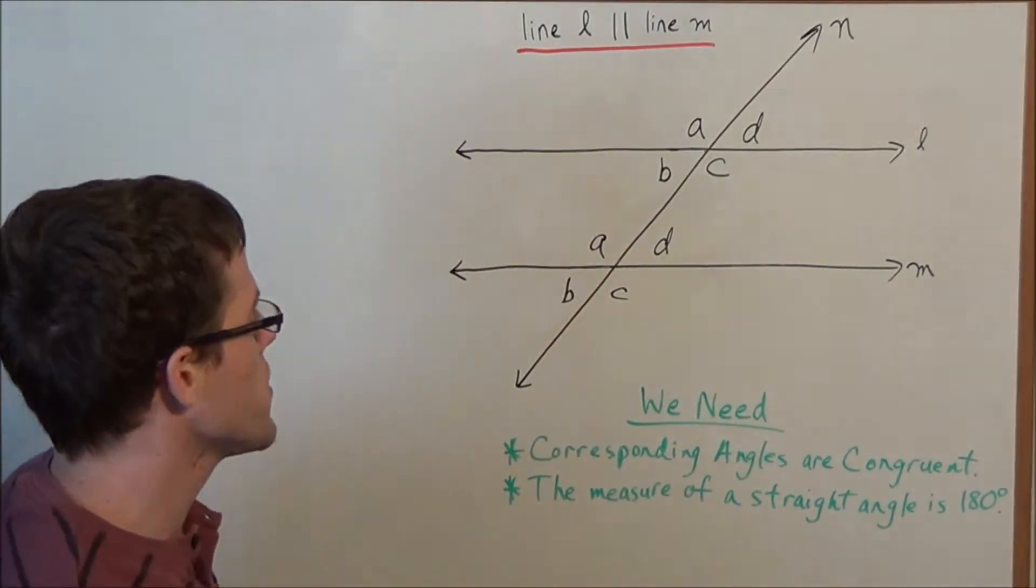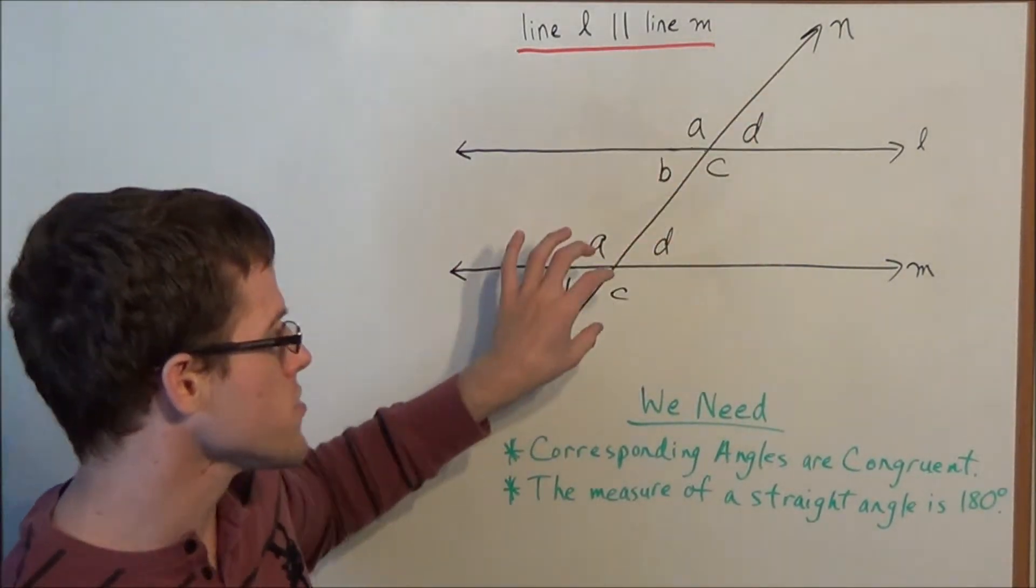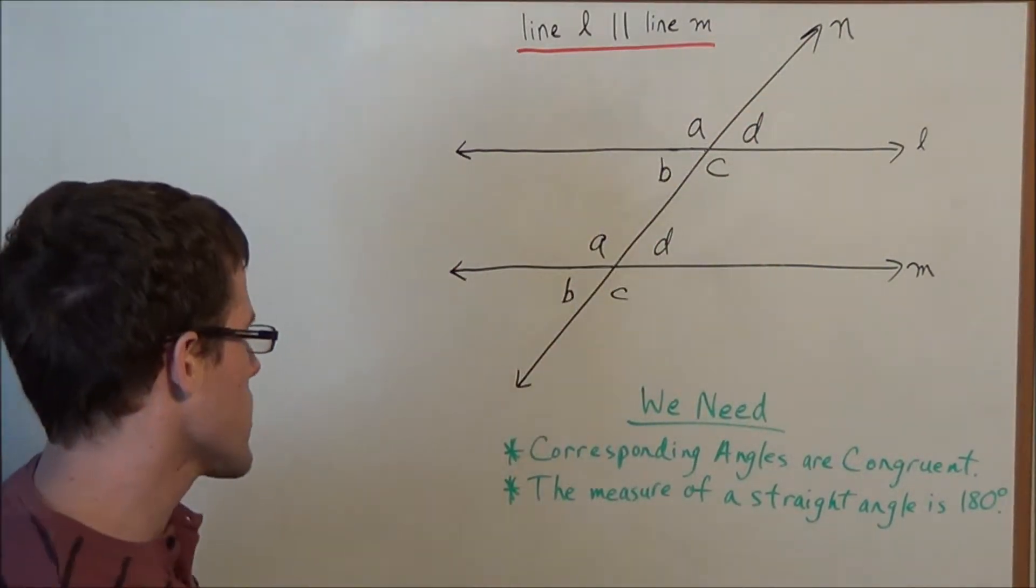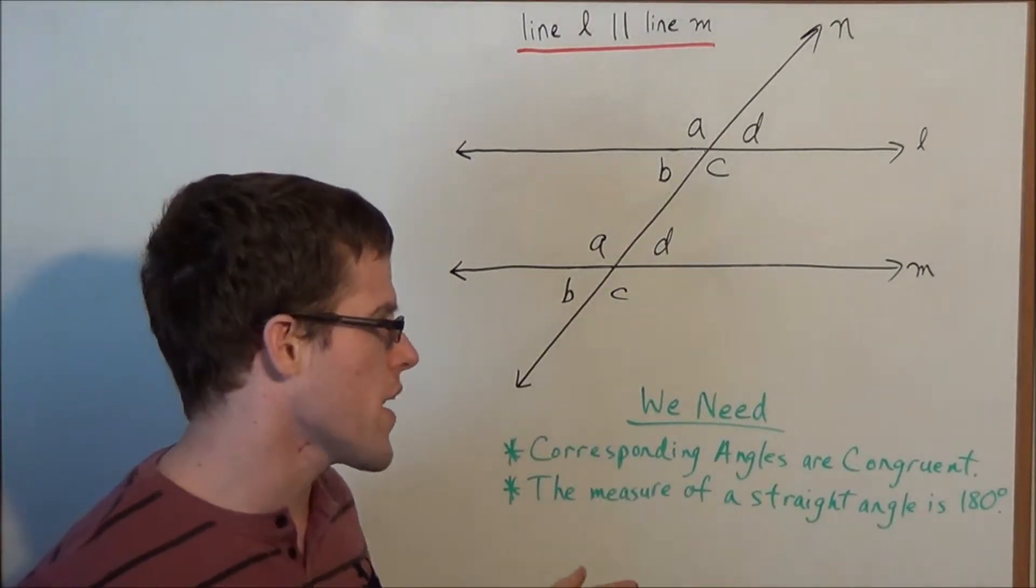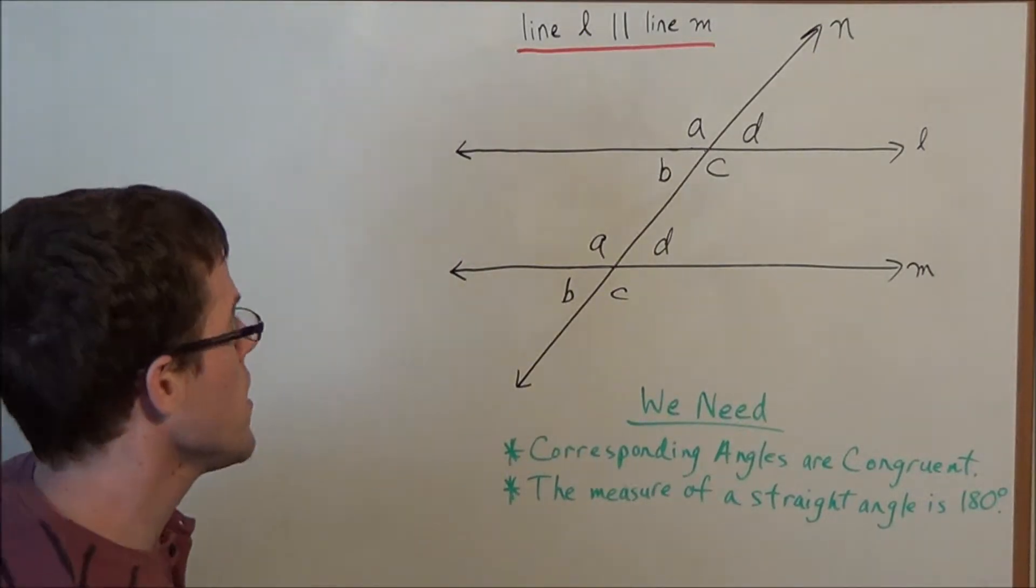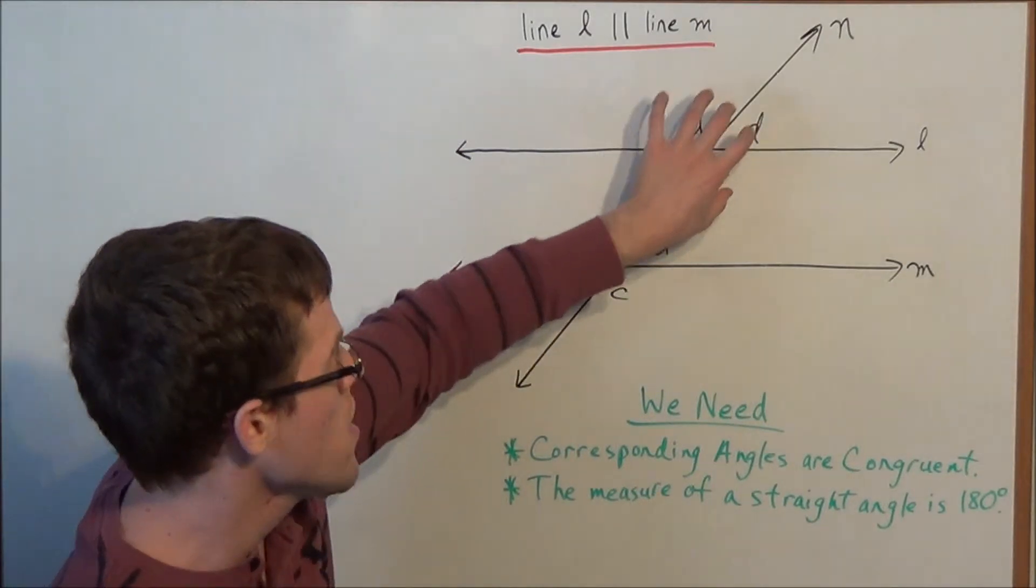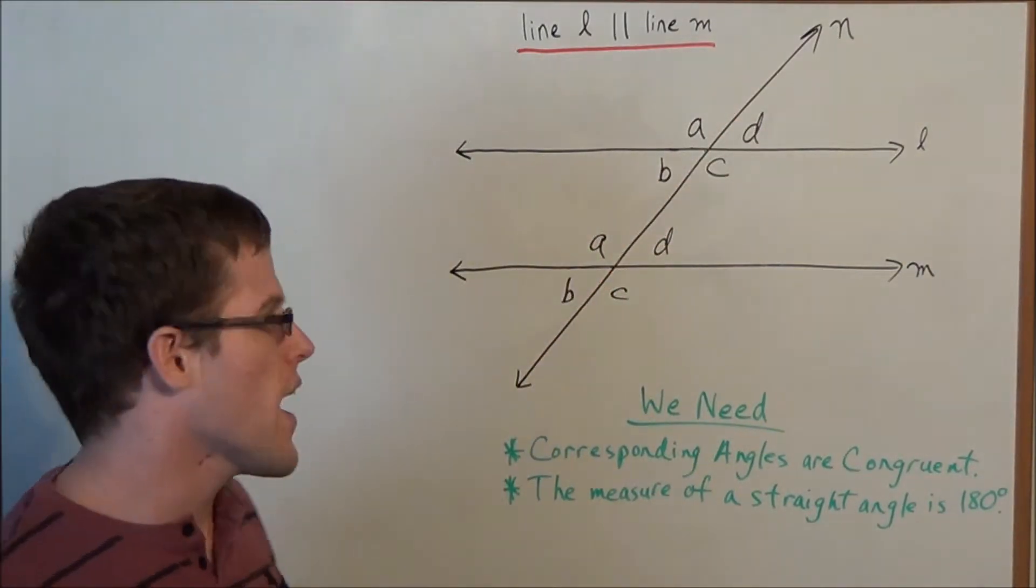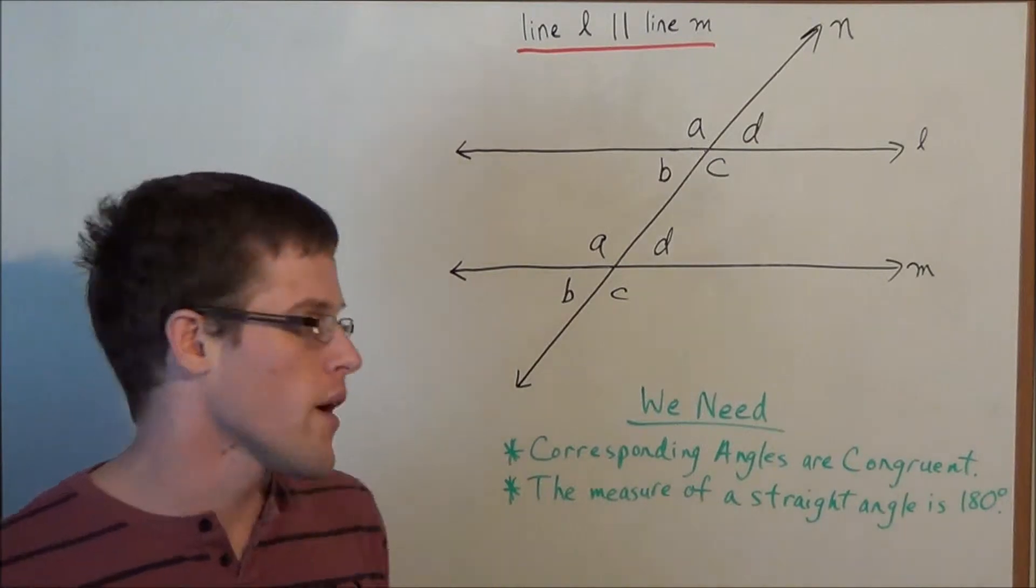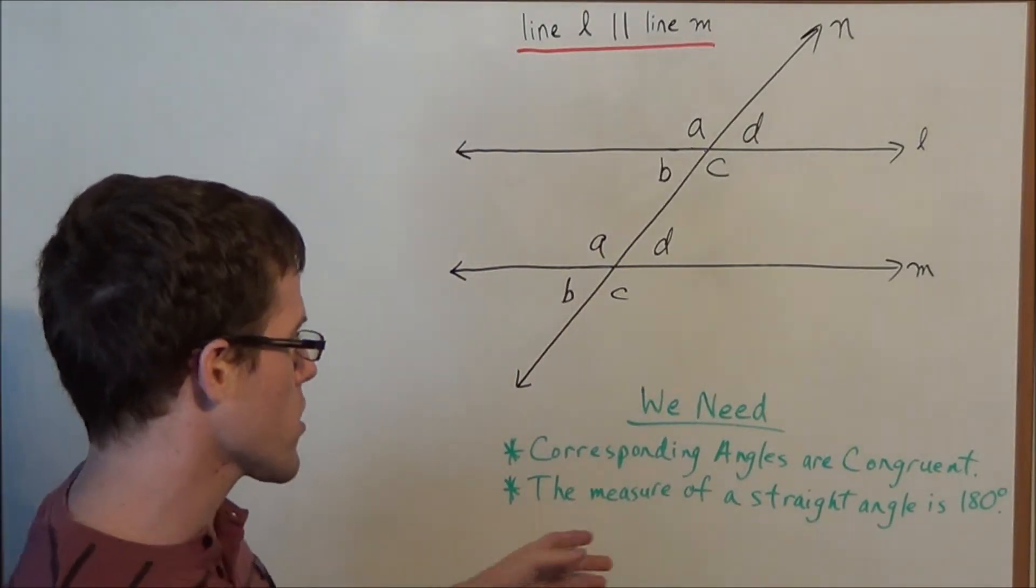So now this gets us started and we have four angles. But now the second postulate I want to look at, the measure of a straight angle is 180 degrees, allows us to refine the number of angles we have. We have four angles right now and we could refine this to two angles. And how will this work?